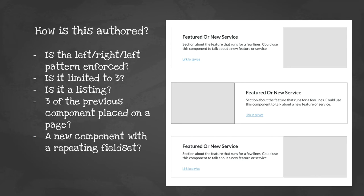What happens when you stack these components together? How is this authored? Is the left-right-left pattern enforced? Is it limited to three? Is it a listing, three of the previous components placed on a page manually? Or a new component with a repeating field set? The fun answer is there's no wrong answer — it's really how you want to build it. The important part is that in a component system, you take a step back and ask how you're going to author all instances of something like this, not just this one instance, to apply consistent patterns.